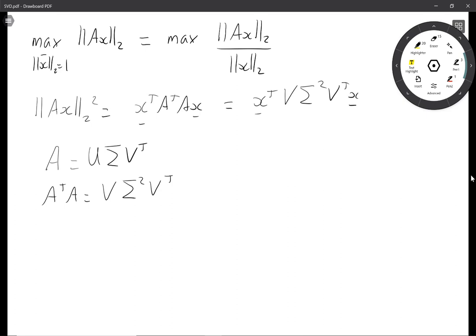...we must have that the maximum of this given x having length 1 must just be, um, σ₁. Okay the maximum of the norm squared is going to be the first eigenvalue λ₁, this is square root of that so it's σ₁ and it's going to be achieved at x equal to v₁.